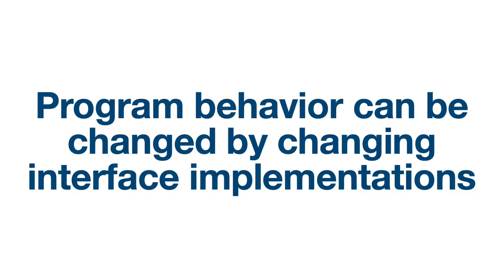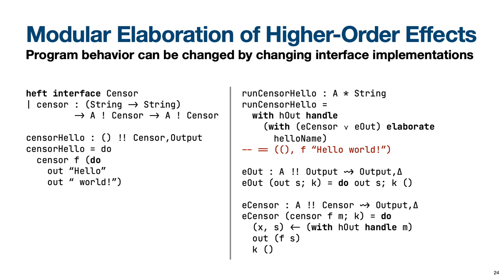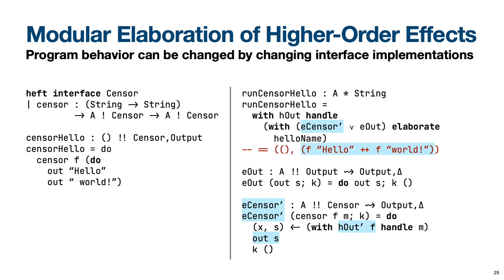Unlike the non-modular sensor prime workaround, our new elaboration algebra-based definition lets us change the behavior of a program without changing the program text or library code. For example, say we wanted to change the behavior of the sensor operation so that instead of applying the censoring function f to the batch output of a computation, we apply it to each string that an out operation is applied to. The E-sensor prime elaboration highlighted here does just this. Depending on what f is, the result computed by runSensorHello will now differ from before. We have thus changed the behavior of our sensor hello program without modifying any of the program and library code.